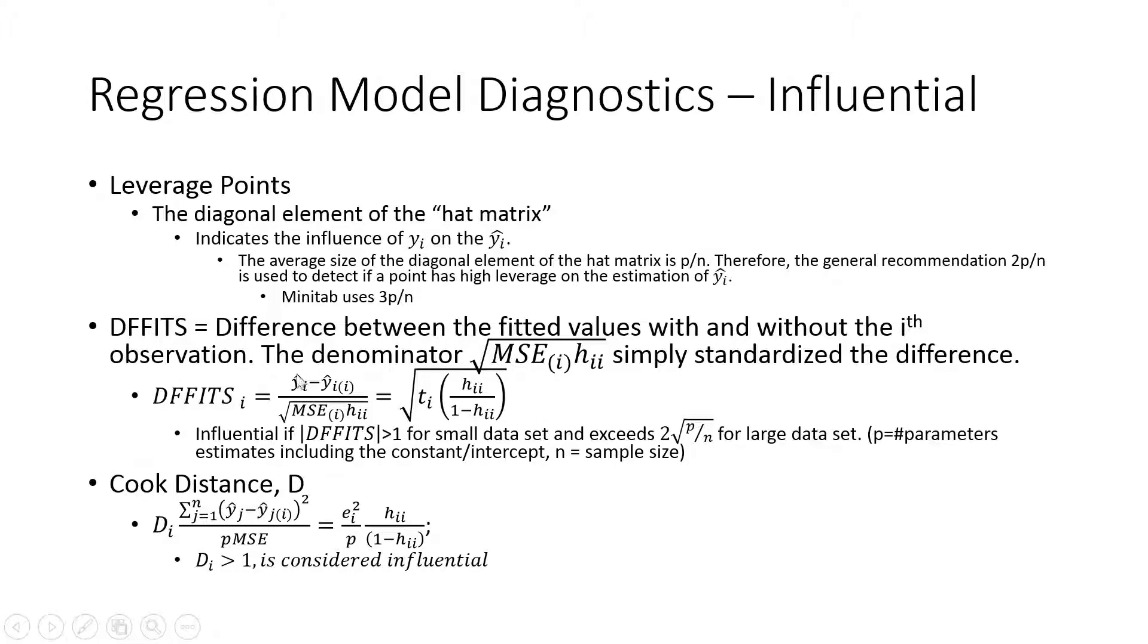First thing is DFFITS. What is DFFITS? Here you can see y i hat, which is the predicted value of ith observation. Now y i hat (i) is in parenthesis. That means if we delete that ith observation, what is the predicted value of ith observation? So this is the ith observation predicted value minus deleting that observation and then predict that. That's why it's called the difference between fitted values with and without ith observation.